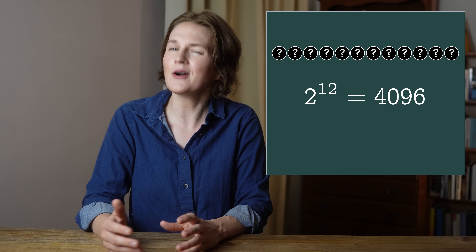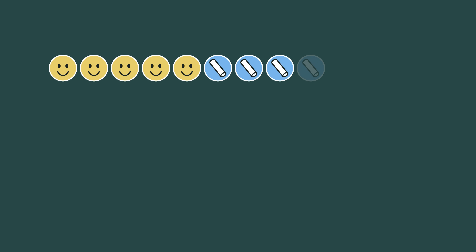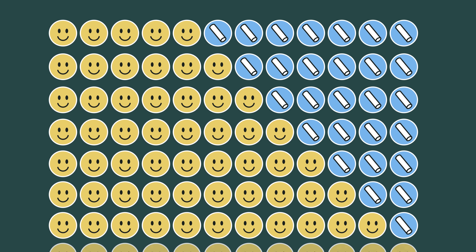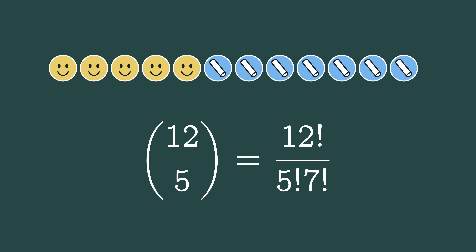So how do we calculate how many of those 4,096 games you win? You win if you get at least 5 points, so any game extension where you get 5, 6, 7, 8, 9, 10, 11, or 12 points is a win for you. But there are many ways to get 5 points — there are 12 choose 5 ways to get exactly 5 points, and 12 choose 6 ways to get exactly 6 points, and so on.